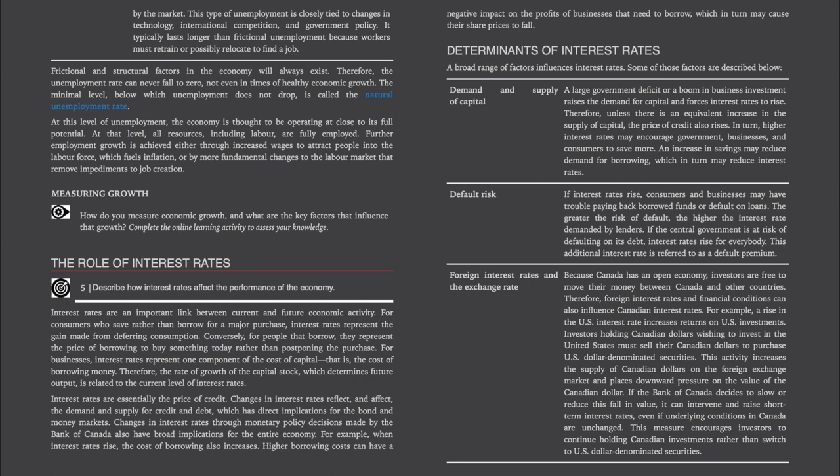At the natural rate of unemployment, the economy is thought to be operating at close to its full potential — all resources, including labor, are fully employed. Further employment growth is achieved either through increased wages to attract people into the labor force, which fuels inflation, or by more fundamental changes in the labor market that remove impediments to job creation.